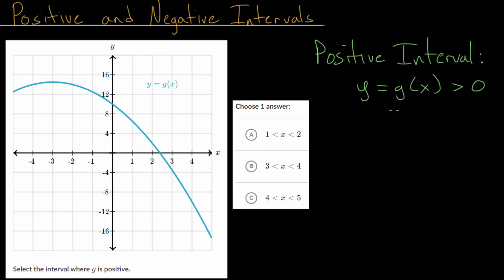So we're looking for positive y values. If the y values are positive, then we would call that a positive interval. And we'll look at specifically which x values this occurs on.